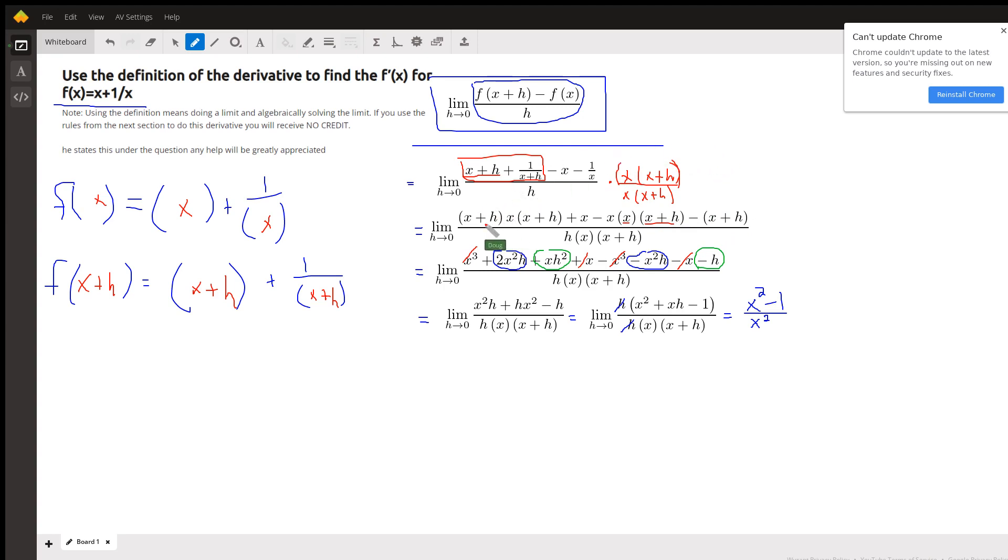Now we're going to multiply these two binomials together or square that binomial and multiply by x. That gives us this x cubed plus 2x squared h plus x h squared. Here's the plus x.